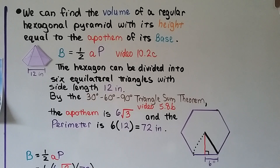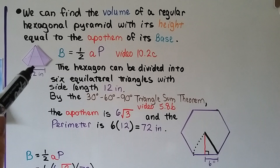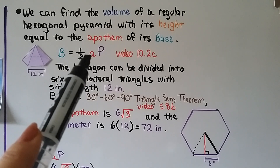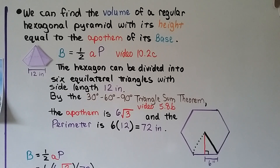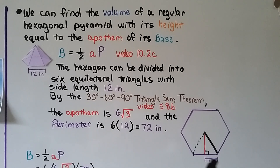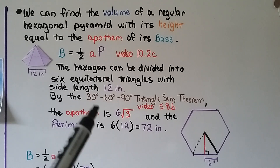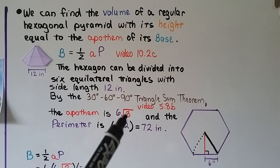We can find the volume of a regular hexagonal pyramid whose height equals the apothem of its base. Each side of the hexagon is 12 inches, and since it's regular, all sides are equal. Using the formula from lesson 10.2c, the base equals one-half times the apothem times the perimeter. The hexagon divides into six equilateral triangles with side 12 inches, and by the 30-60-90 triangle theorem from lesson 5.8b, the apothem is 6√3. The perimeter is 6 times 12, which is 72 inches.